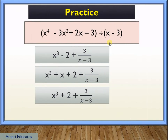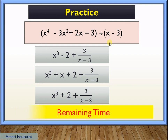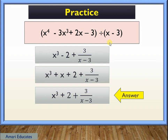Last practice: divide the quantity of x to the fourth minus 3x cubed plus 2x minus 3 by the quantity of x minus 3. Pause the video if you need more time. The correct answer for this problem is x cubed plus 2 plus 3 all over x minus 3.